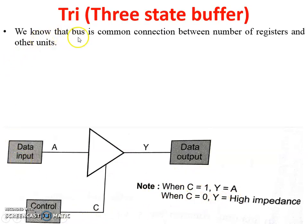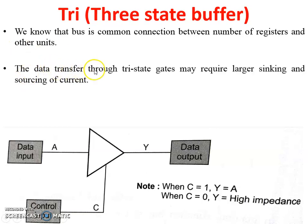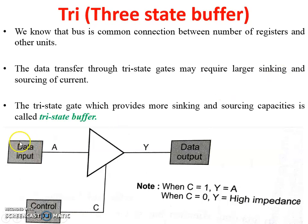First, we know that a bus is a common connection between a number of registers and other units — it is a common path or common bus between all the devices or equipment connected to the system. The data transfer through tri-state gates may require larger sinking and sourcing of current. Sinking means providing a grounded connection to the load, and sourcing means providing a voltage connection to the circuit load.